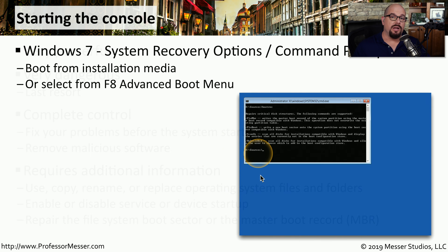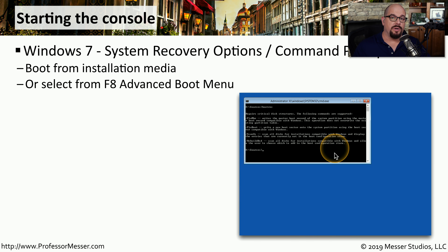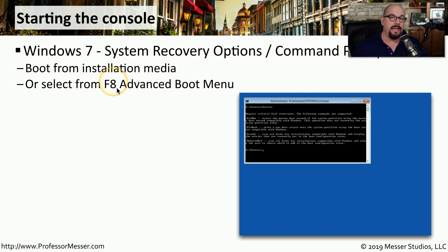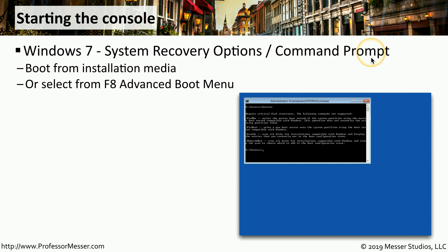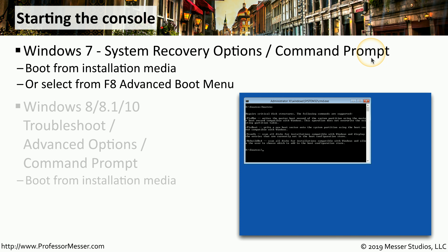To use the console in this recovery environment in Windows 7, you would need to either boot from the installation media, or as the system is booting up, press the F8 key, which brings up the advanced boot menu. From there, you can choose the system recovery options and choose the command prompt option.